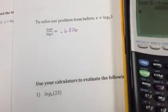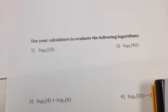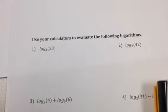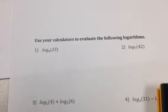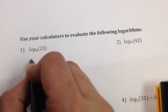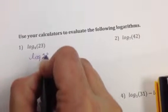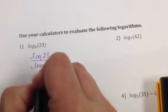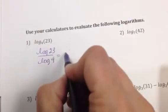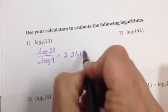Okay. Now to give some more examples. On the first one, we would rewrite that as the log of 23 over the log of 4. Log of 23 divided by the log of 4. And when we put that in our calculators, we get 2.2618.